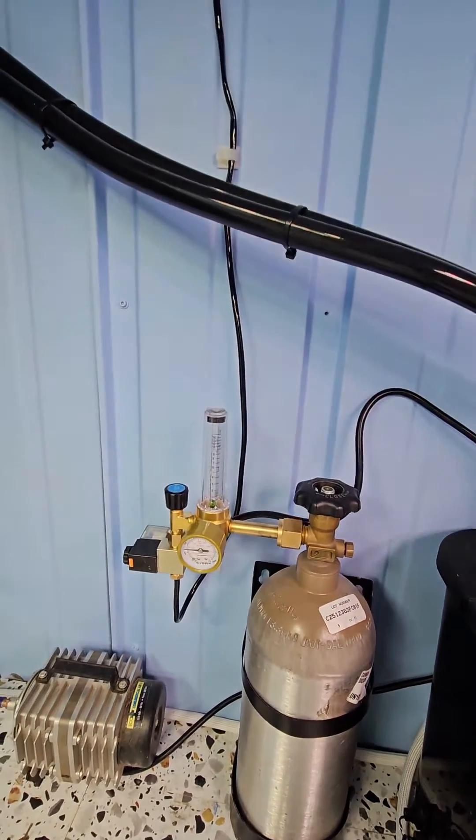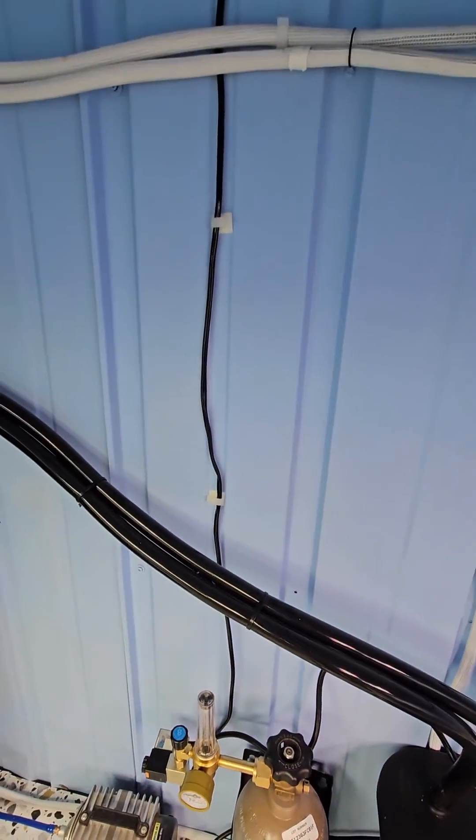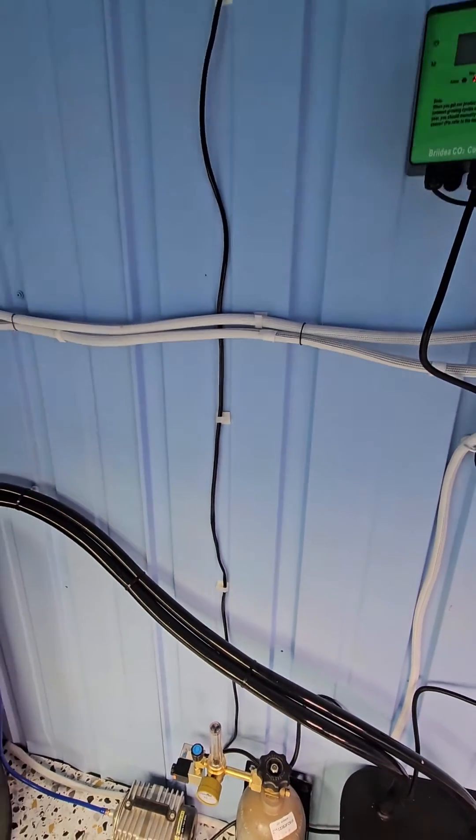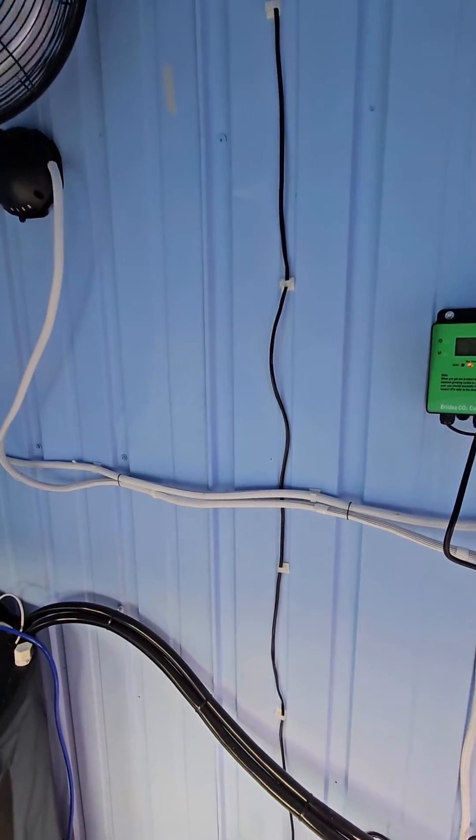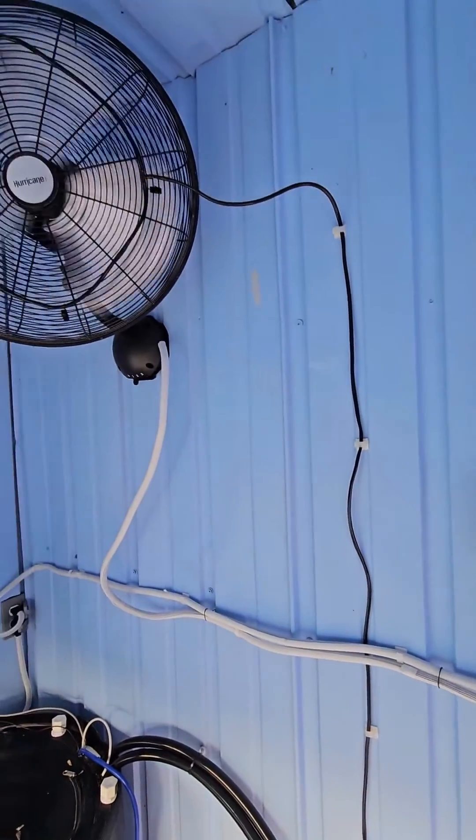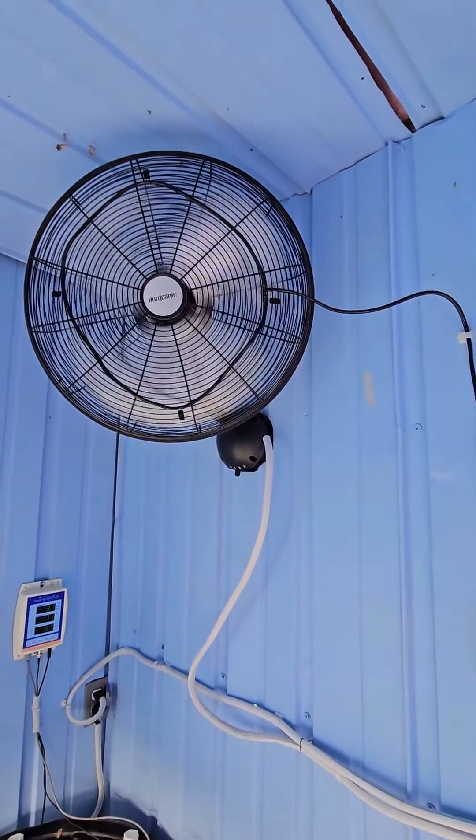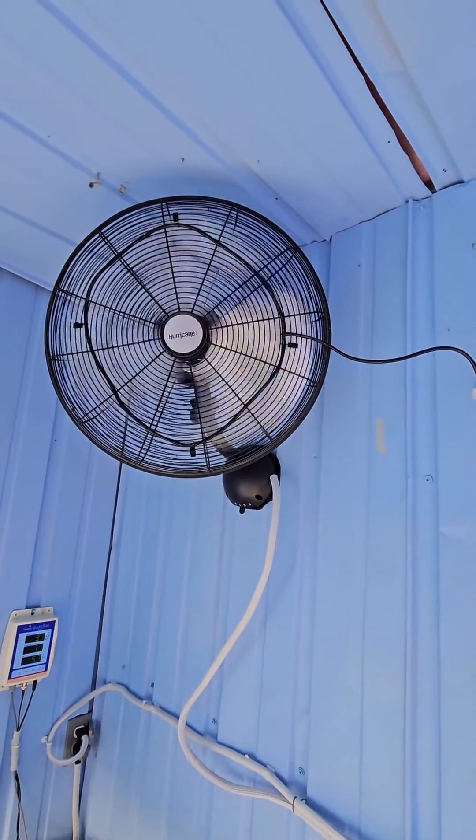There's a dial that tells you how much CO2 you're releasing, which for me since I'm using a controller isn't that big of a deal. I think I have it set at 3 PSI. It bleeds through this black tube that I've drilled some holes in and put it on the fan to kind of distribute and stir that CO2 around.